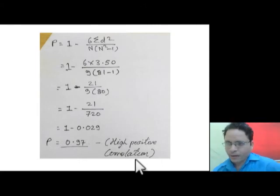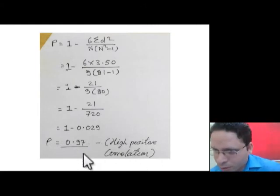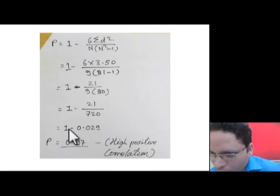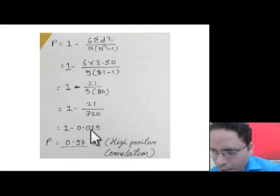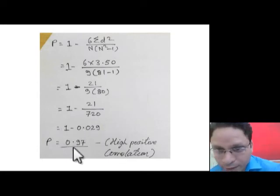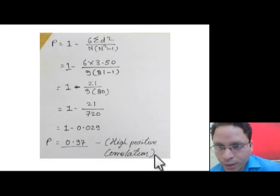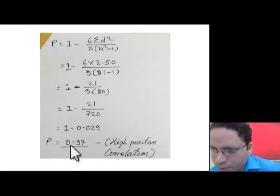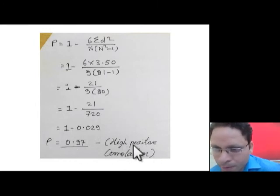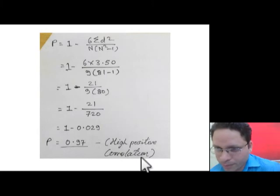This is a high positive correlation. It is positive because there is no minus sign in the result. If the value subtracted from 1 were larger than 1, the answer would be negative, indicating negative correlation. But here the value is positive, so it is a high positive correlation.